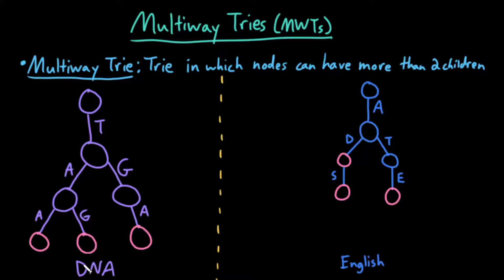So for example, here's a multi-way trie over the DNA alphabet. In other words, the alphabet is A, C, G, T.